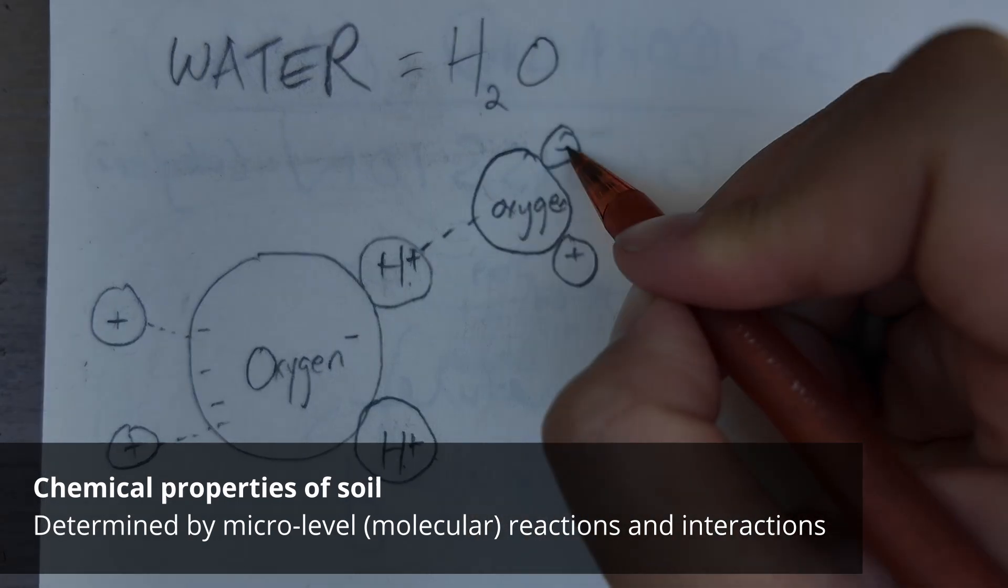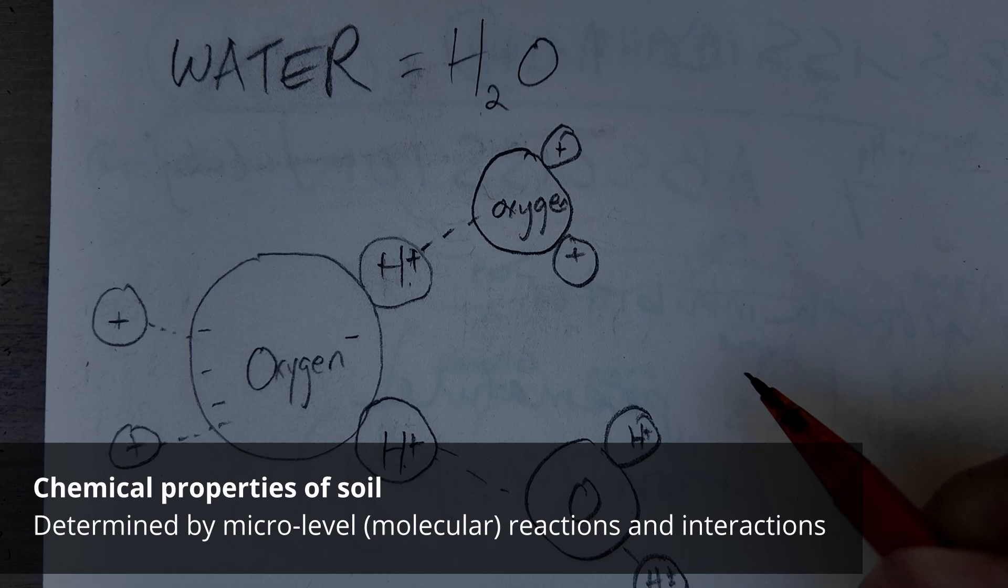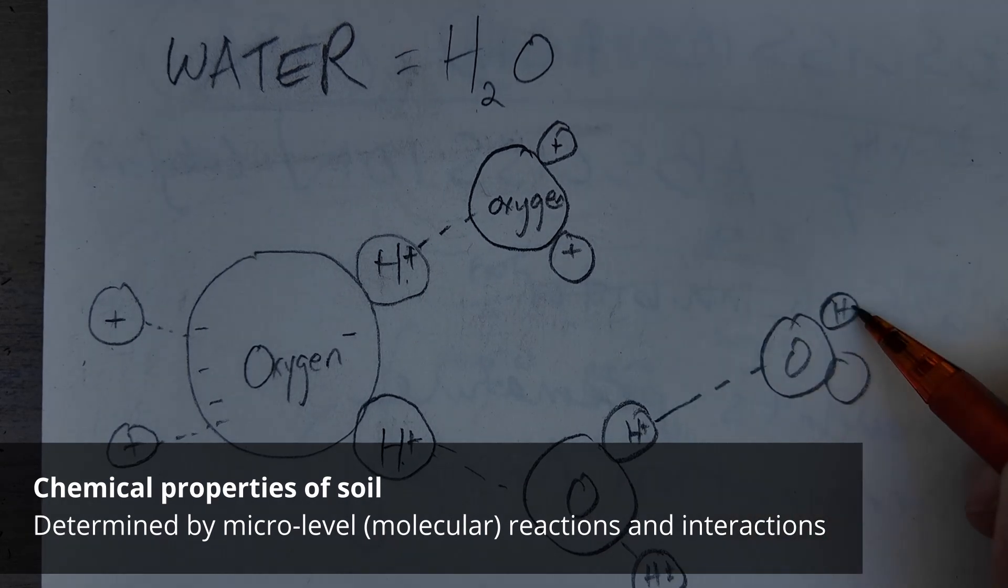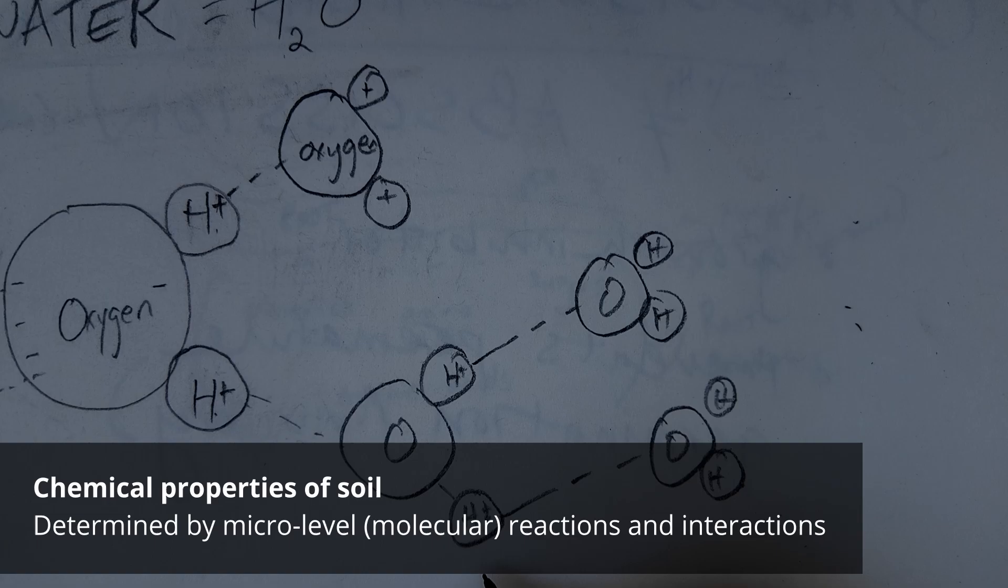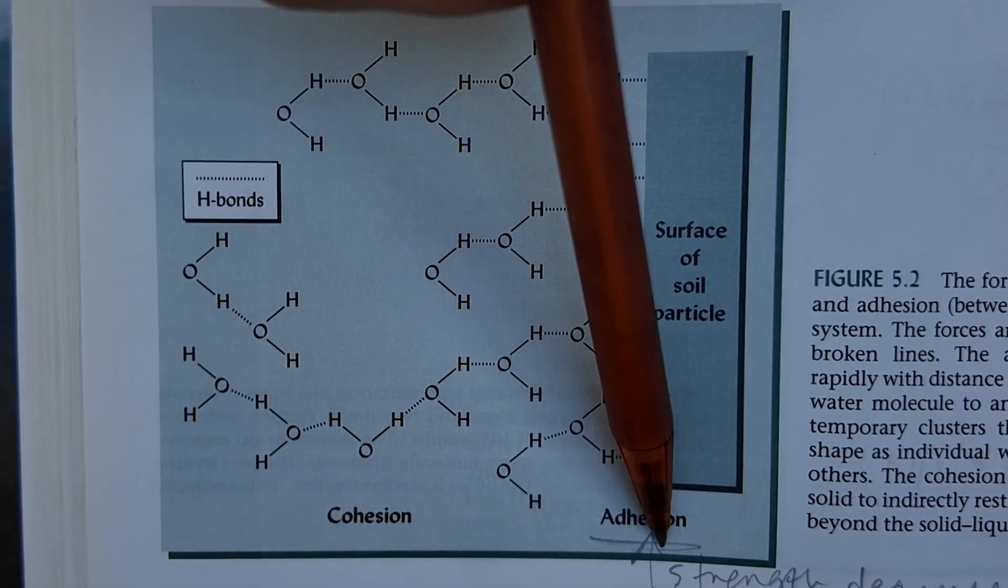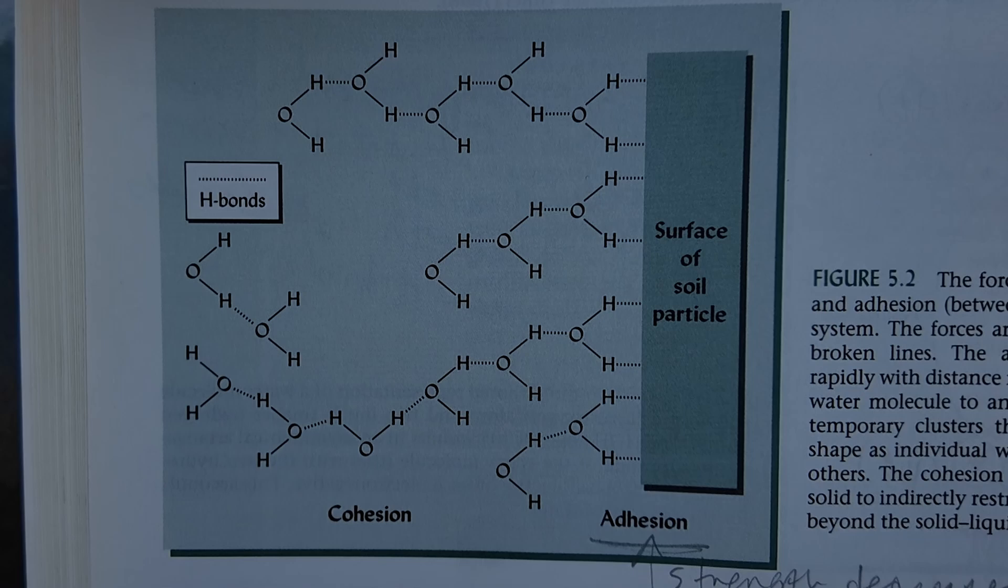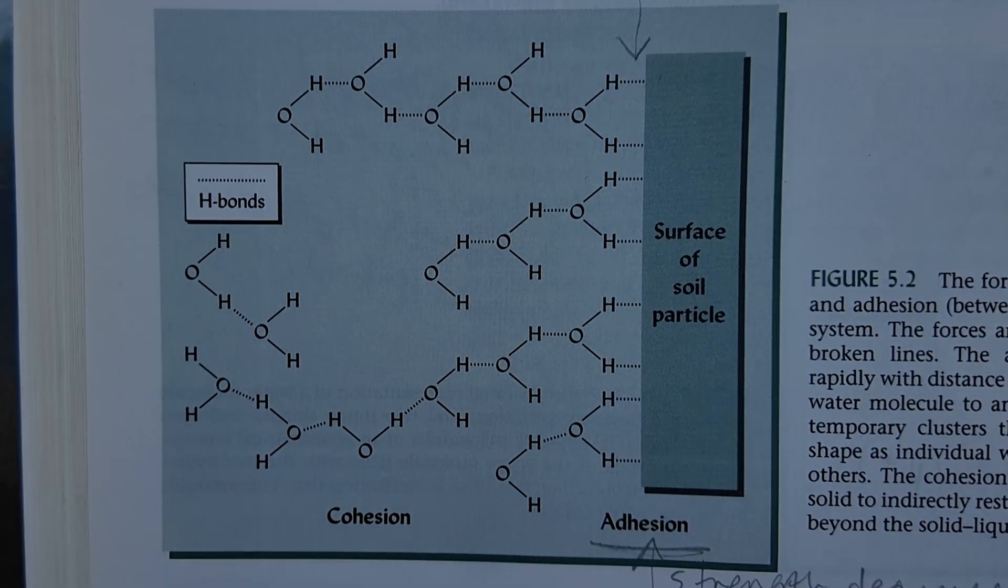The next category is chemical properties. The study guide defines these as ones that are determined by the molecular content. If I was to explain that more, I would say these are the properties that we cannot directly observe because they're based on atoms, molecules, compounds happening at such a small level that you can't even see it with a microscope.